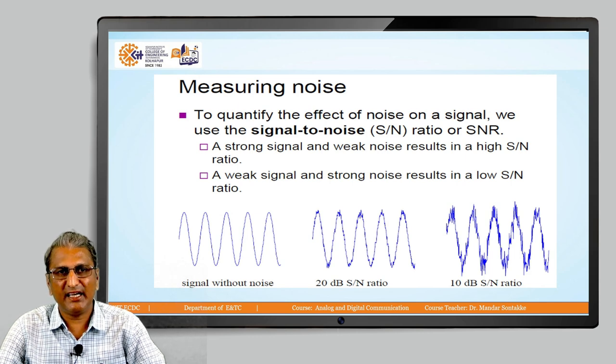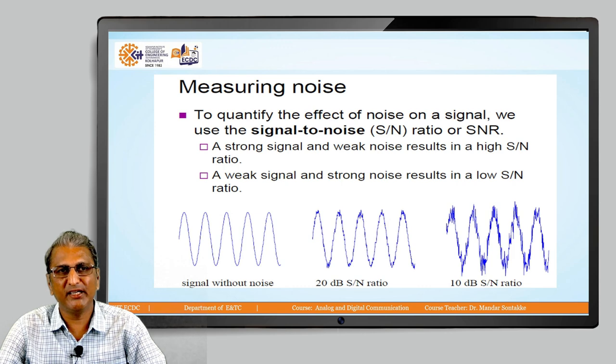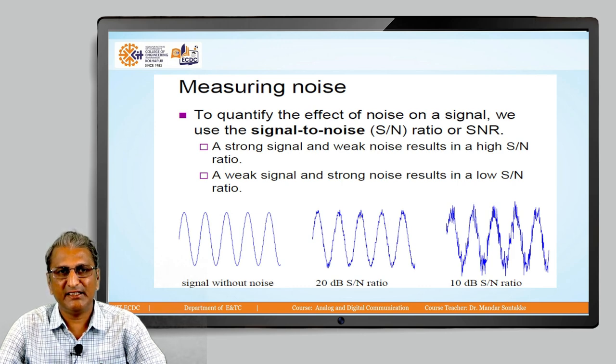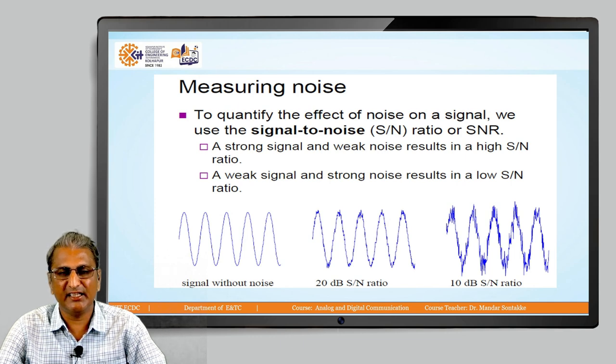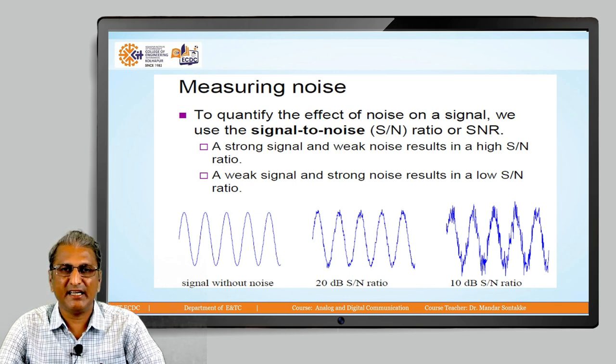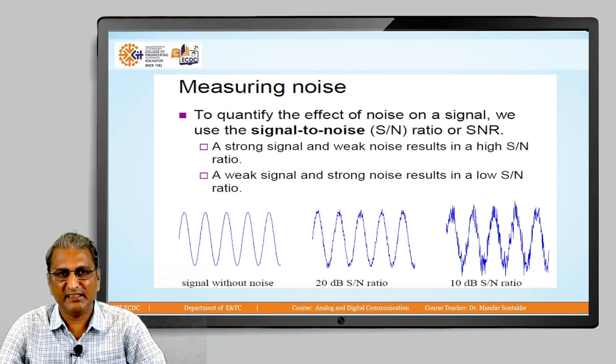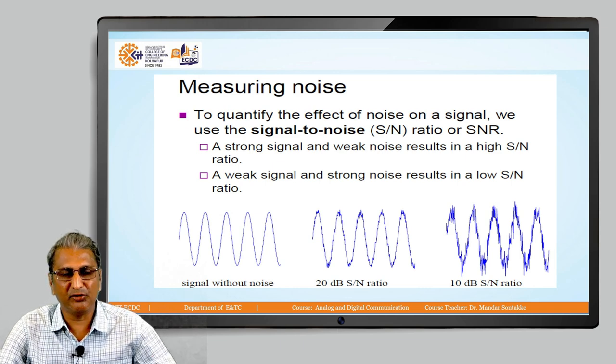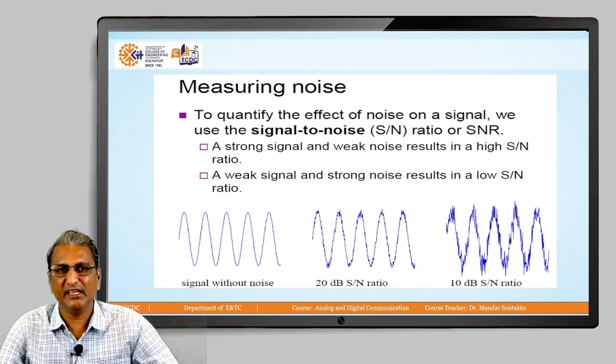The first diagram or sine wave is signal without noise because there is no disturbance, no distortion. Second, it is 20 dB SNR. The SNR is either unitless or measured in decibels. It is 20 dB in the second diagram and 10 dB in the third diagram. The first diagram is without noise, and in second and third, it is with noise. There is some distortion, some noise.